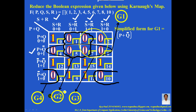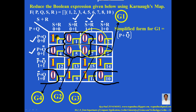Now let me simplify G2. For every zero of G2, mark the left-hand side and the top. On the left-hand side, the stable variable is P — Q is not stable because it changes state from Q to Q complement. On the top, the stable variable is R complement — S is not stable because it changes state. So for G2, the simplified form is P plus R complement.